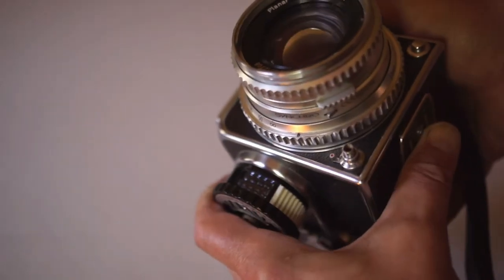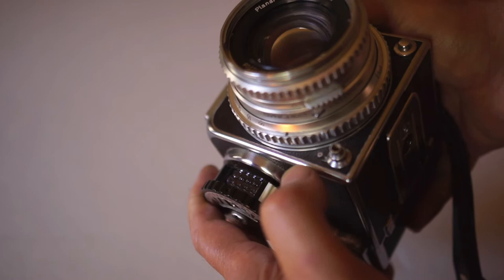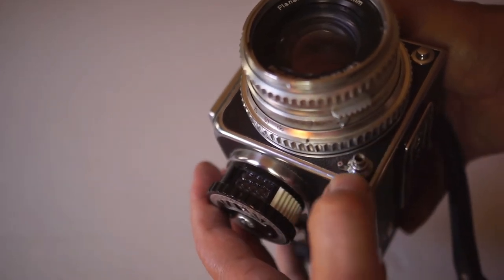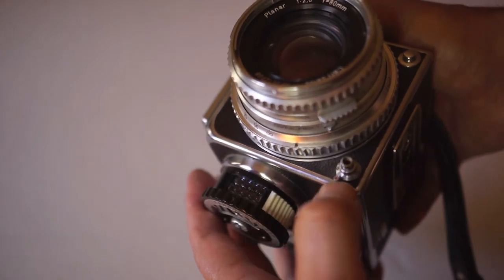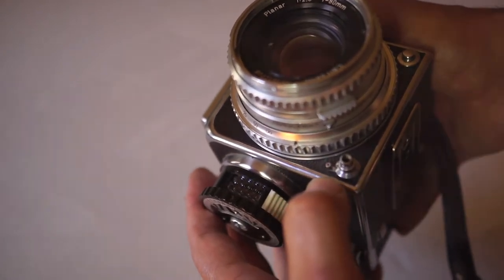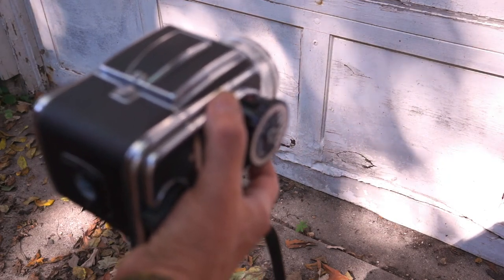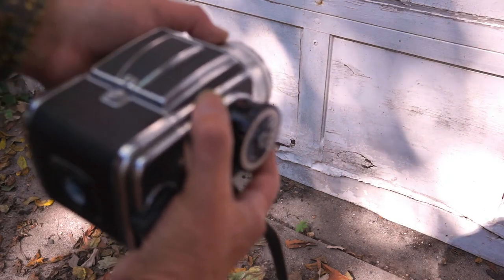The shutter release button does have a lock. You want to make sure that's on O. If you can't push in the shutter button, it might be because that got turned down. It's a very small little lever. The designers of this camera probably intended it to be on a tripod, but it works fairly well hand-held.